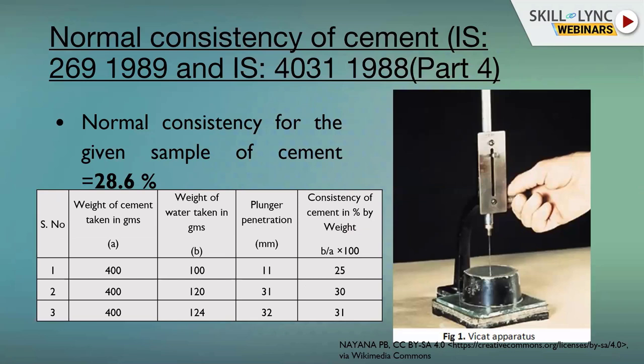Normal consistency of cement is tested as per IS 4031 Part 4. This test determines the quantity of water required to produce a cement paste of standard consistency. If cement is quite fine, less water is needed to make a paste; if cement is coarser, the normal consistency — and thus the water requirement — will be higher.